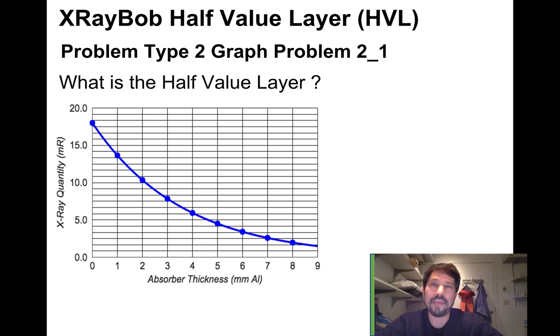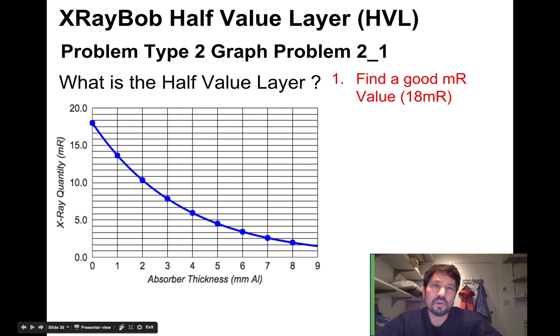Another way you can have a math problem with HVL is they'll give you a graph. We've got x-ray quantity in milli-Roentgens here and the absorber thickness millimeters of aluminum on our x-axis. We'll find a good MR value. Let's pick the zero point. That looks like 18 to me.